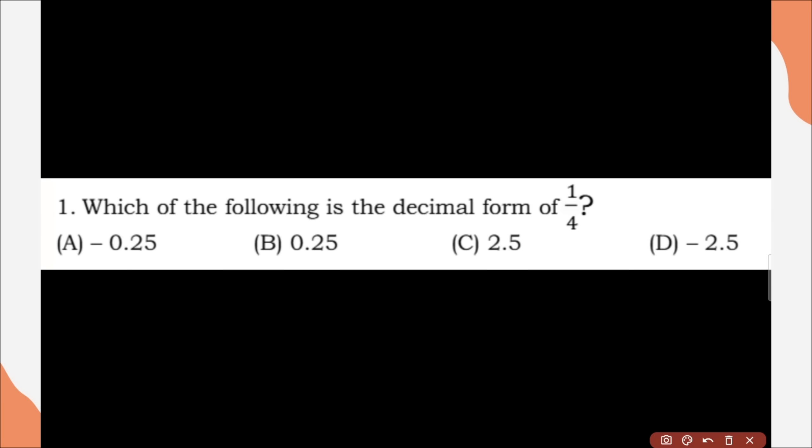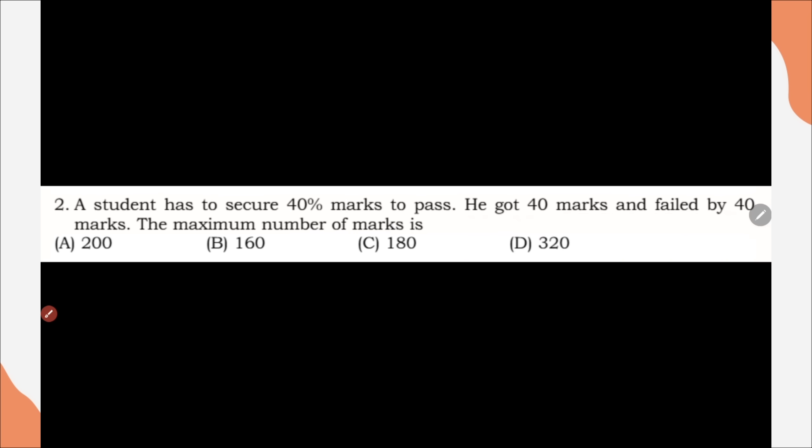So the first question, which of the following is a decimal form of 1 by 4? The correct option is option B, 0.25. Second question, a student has to secure 40% marks to pass. He got 40 marks and failed by 40 marks. The maximum number of marks is, correct option is 200, option A.